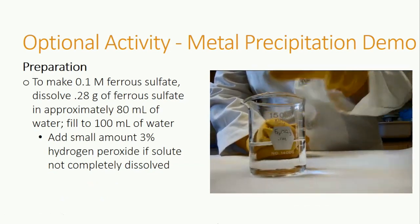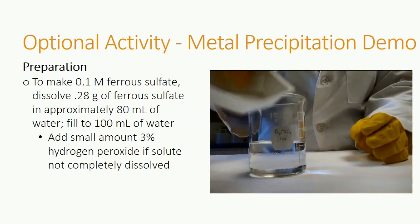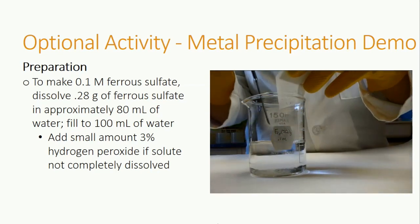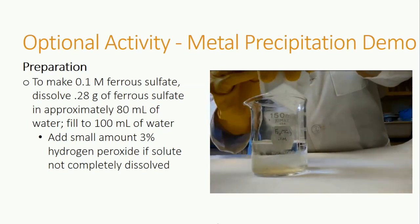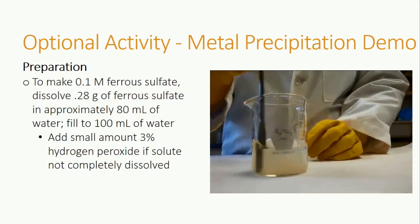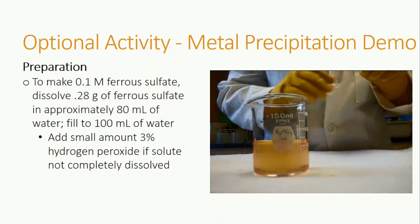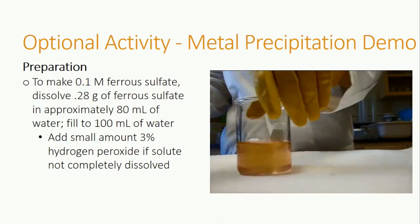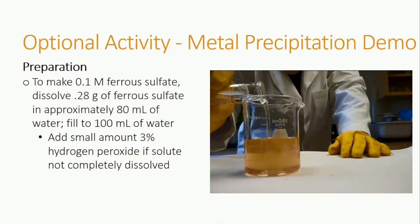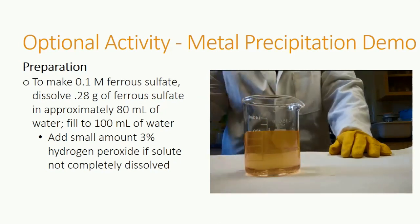Now we need to prepare the materials. To make 0.1 molar ferrous sulfate, dissolve 0.28 grams of the ferrous sulfate powder into about 80 milliliters of distilled water, stirring to help the powder dissolve. After stirring, top off the water until it reaches 100 milliliters of solution, stirring again to make sure all solids are dissolved. If the ferrous sulfate isn't completely dissolving, add a very small amount of 3% hydrogen peroxide, no more than 1 or 2 milliliters, to completely dissolve.